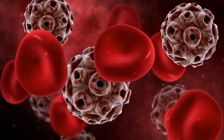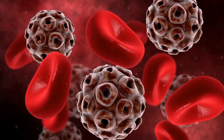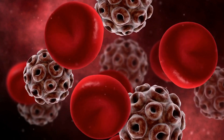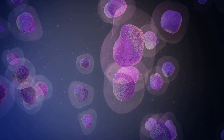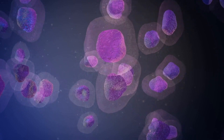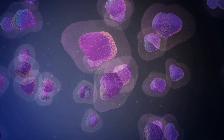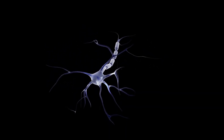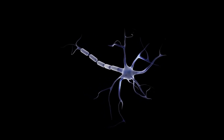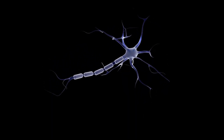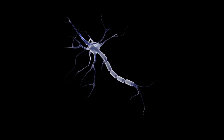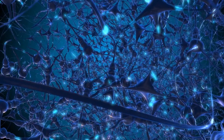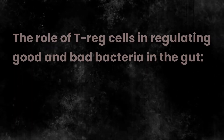Intestinal epithelial cells (IECs) are specialized cells that line the gastrointestinal tract and play a critical role in maintaining gut health. IECs sense the presence of bacteria in the gut and interact with immune cells to help regulate the immune response. Certain cells such as dendritic cells and macrophages reside next to the lining of the gastrointestinal tract and sense what's going on inside the gut, determining whether bacteria are good or bad, then sending signals to immune cells to let them know what is happening.